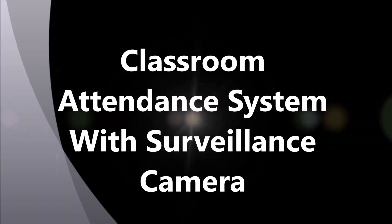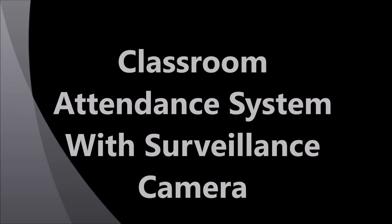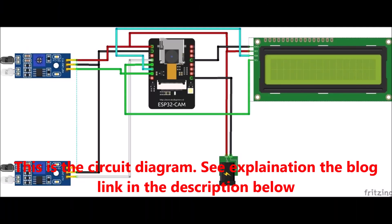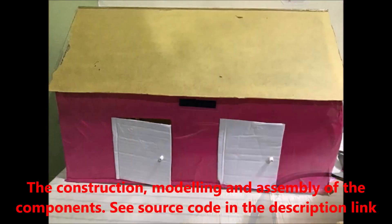Welcome to how to design a classroom attendance system with surveillance camera. First, the circuit diagram. This circuit diagram is explained in the description below. We use the ESP32 cam, two infrared sensors, an LCD, and a 5-volt power supply.